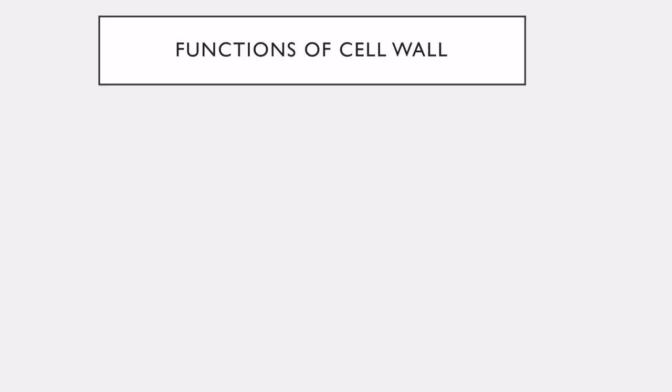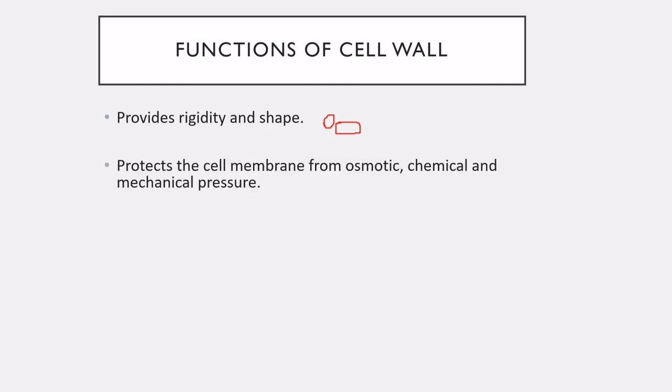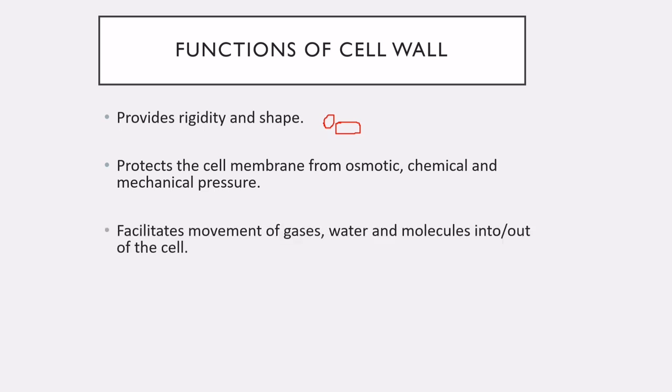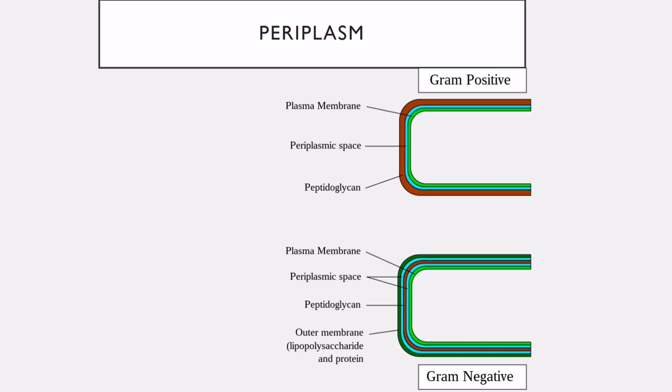The overall functions of the cell wall include providing rigidity and shape to the cells — different shapes like cocci, bacilli, coccobacilli, spirillum, and vibrio are possible because of the cell wall. It also protects the cell membrane from osmotic and mechanical pressures, helps in the movement of gases, and contains antigens that help the bacteria evade the immune system.